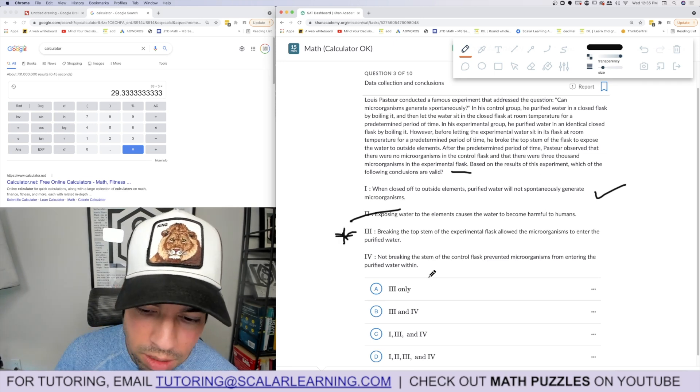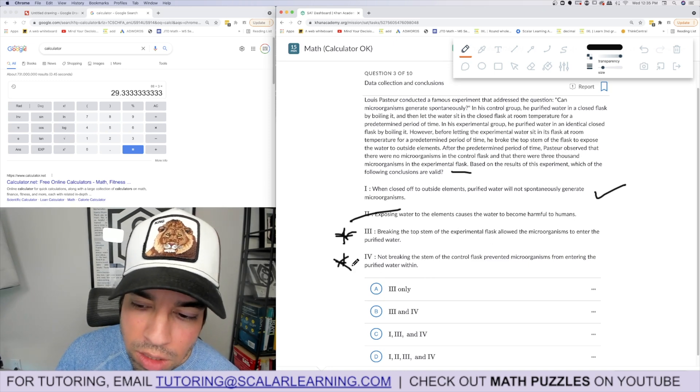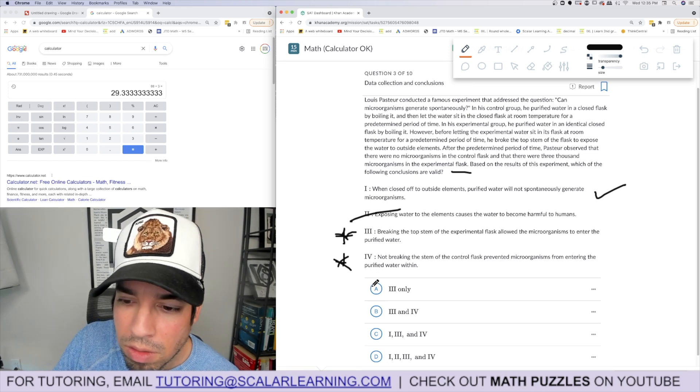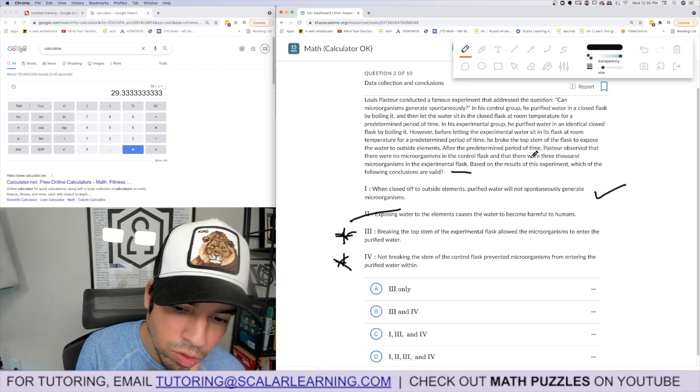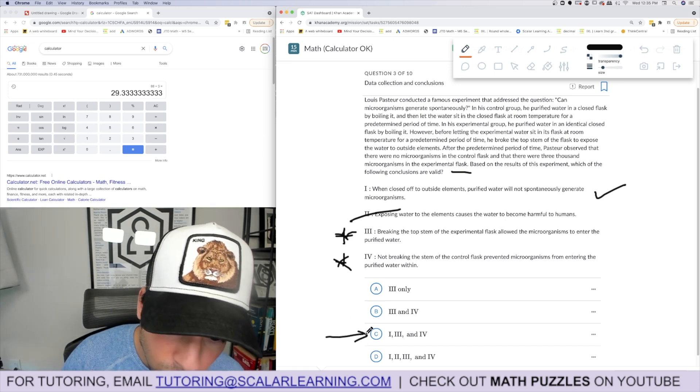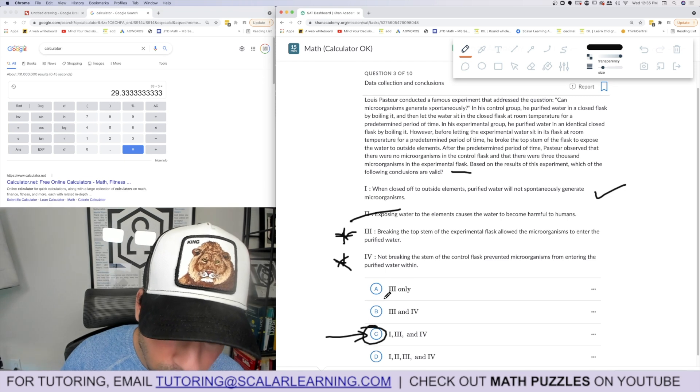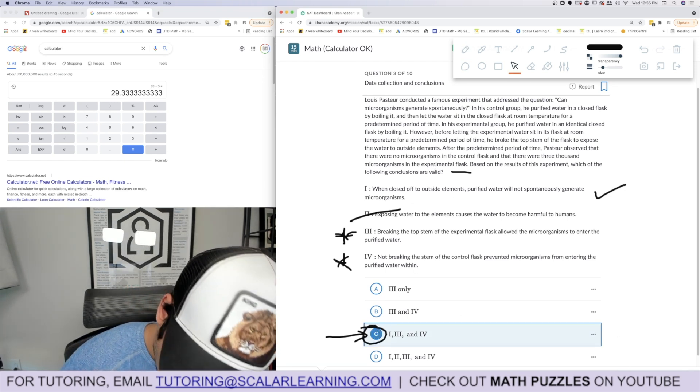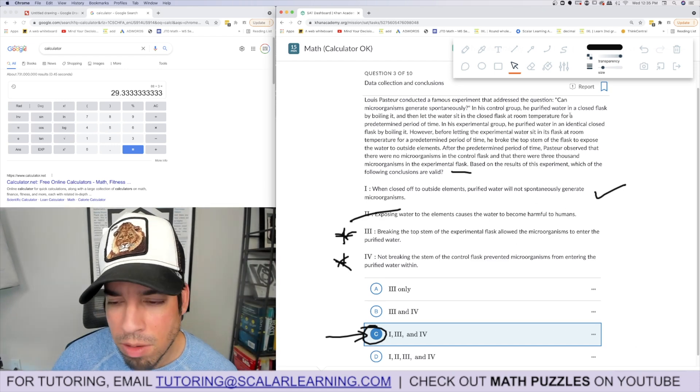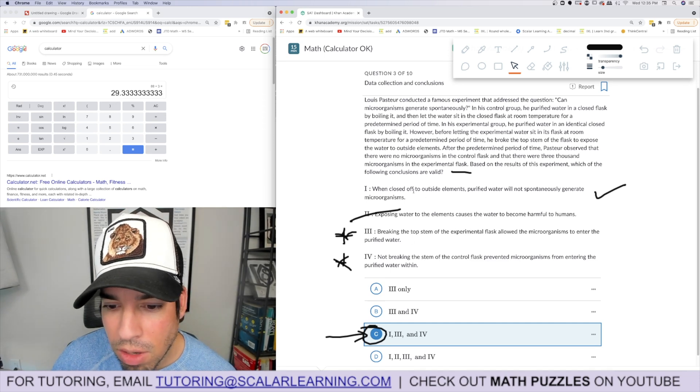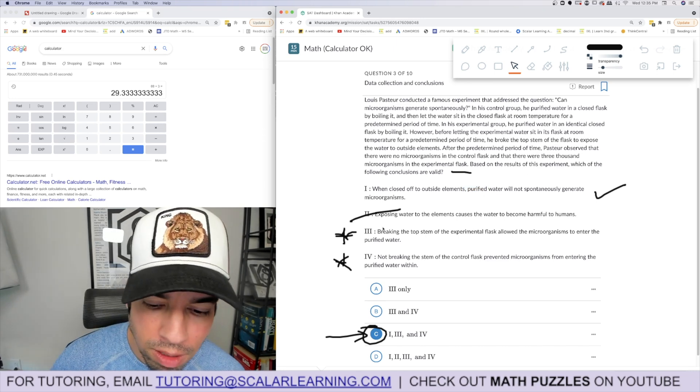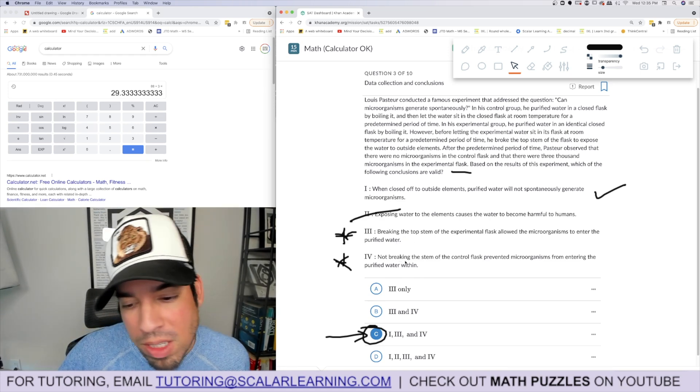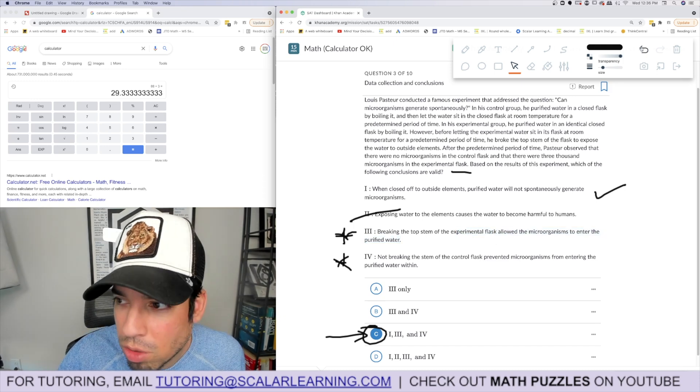Breaking the seal introduced microorganisms into the purified water. Not breaking the seal prevented microorganisms, maybe. So it's either one, three and four which is C, or one only. It's got to be this. The thing I don't like about this in comparison to typical problems is these conclusions are based on just one experiment. It's just atypical and that's why I didn't like this question. Usually it's much more obvious to dismiss stuff, but we have no other choices so we're going to go with the best option.